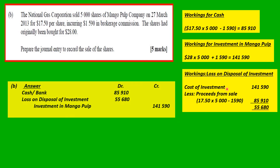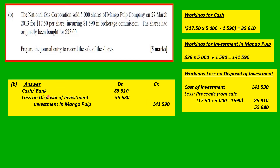So our journal entry is: debit cash in bank with $85,910 — that's how much we collected. Credit the investment in Mango Pulp for $141,590, which removes it from the books. And we debit loss on disposal as the balancing figure of $55,680.